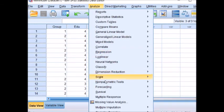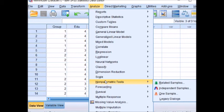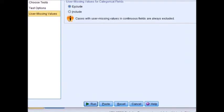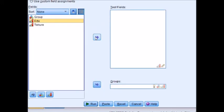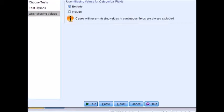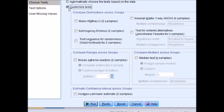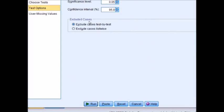You will just go to analyze, non-parametric tests, independent samples, objectives, click on customize analysis, fields, put education in test field, tenure in test field and your grouping variable into groups. Click on setting, choose test, customize test, click on Mann-Whitney U, test options, our significance level is 0.05 and confidence interval is, of course, then 95%. We don't have any missing cases.